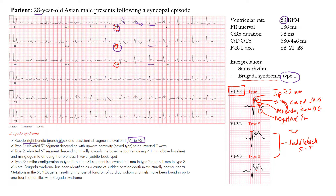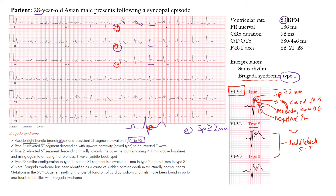In type 2, point A is again J point elevation of two millimeters or more. Remember, the J point is the end of the QRS complex and start of the ST segment — that's where we measure ST elevation, or about 40 to 80 milliseconds after that point on an exercise stress test.